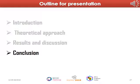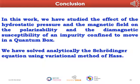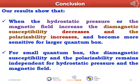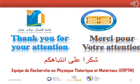Conclusion. In this work, we have studied the effects of hydrostatic pressure and magnetic field on the polarizability and the diamagnetic susceptibility of an impurity confined in a quantum box. We have solved the Schrödinger equation using the variational method of Haas. Our results show that when hydrostatic pressure or the magnetic field increases, the diamagnetic susceptibility decreases and the polarizability increases, becoming more sensitive for larger quantum boxes. For small quantum boxes, both the diamagnetic susceptibility and the polarizability remain independent of hydrostatic pressure and magnetic field. We believe our results will be useful in nanofabrication. Thank you for your attention.